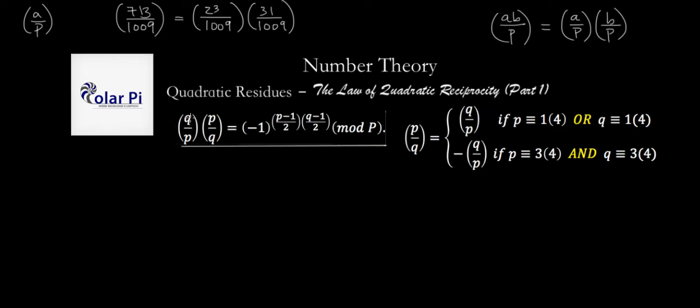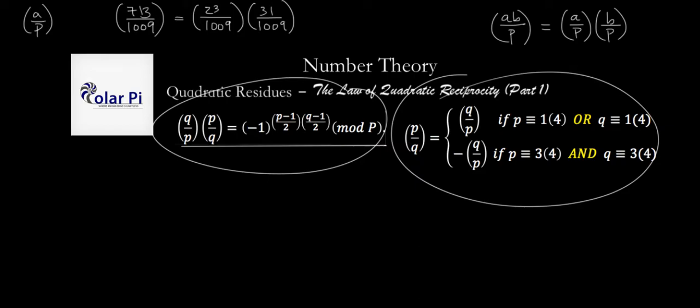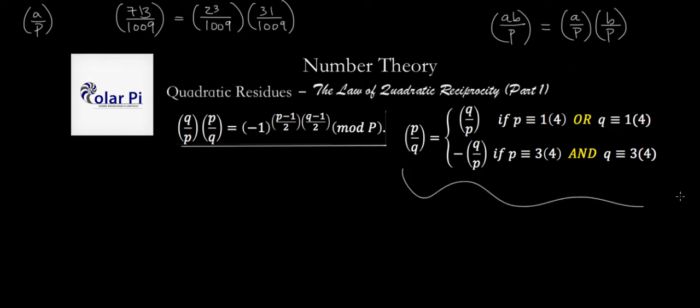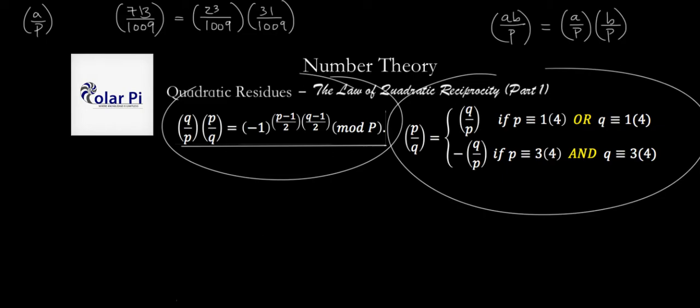We require that both q and p be odd primes. So what is this junk here? It's just a restatement of the law of quadratic reciprocity. So this here is the same as this here, and frequently when we're solving problems, so we're trying to figure out what p over q is, this version is much more user-friendly. So we'll be using this almost every single time. Most of my video here is going to be dedicated to showing you how this is the same as that.